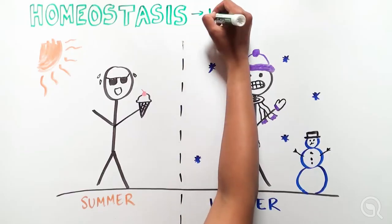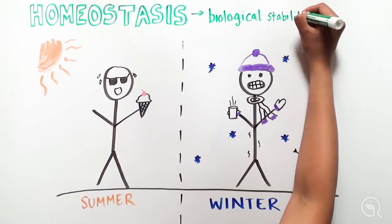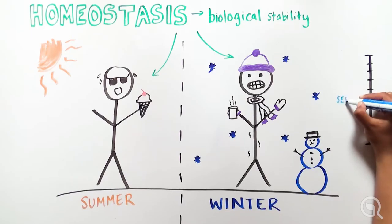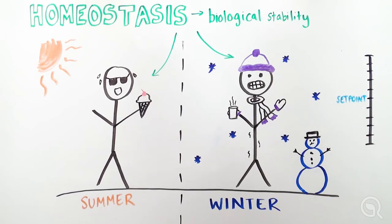Through homeostasis, our bodies achieve optimal internal conditions to maintain biological stability, which is measured in a certain numerical range around a set point.